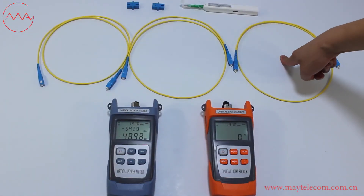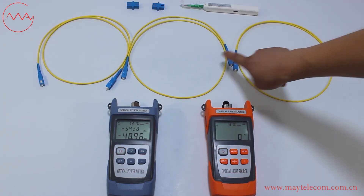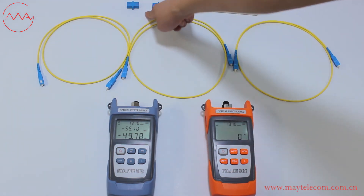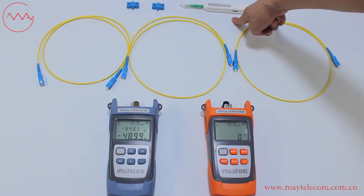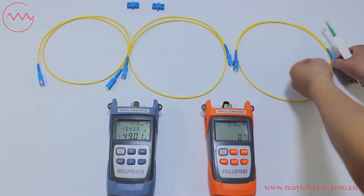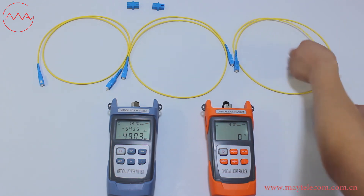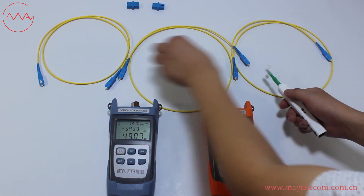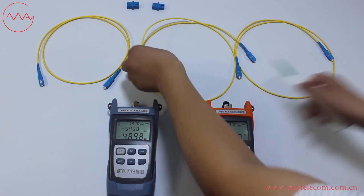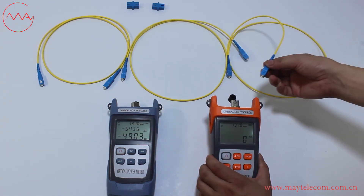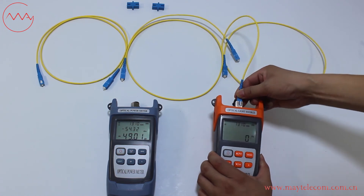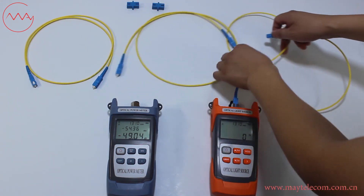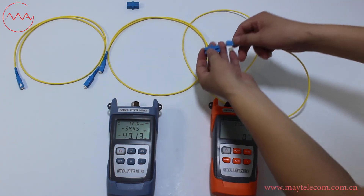This is the reference patch cord — there are two reference patch cords. This is the patch cord under test. The additional accessories are SC adapters and a one-click cleaner. Clean the reference patch cord, then connect one reference patch cord to the optical light source and connect the other side to the second reference patch cord.